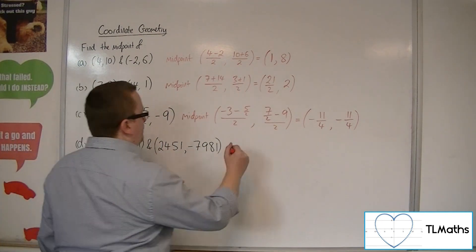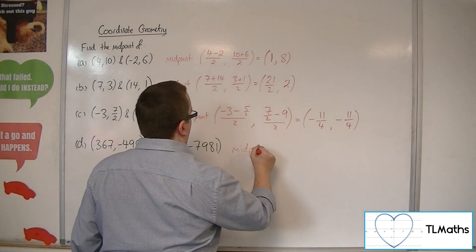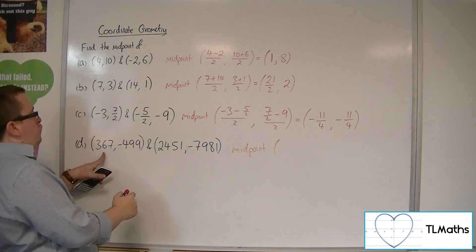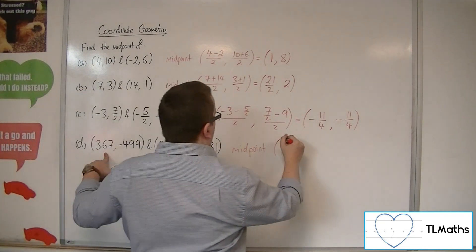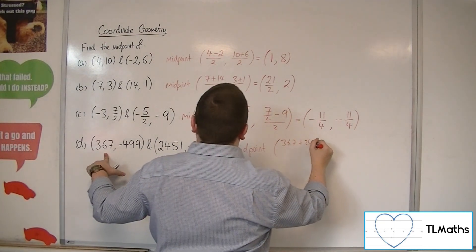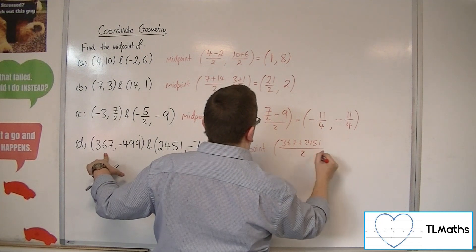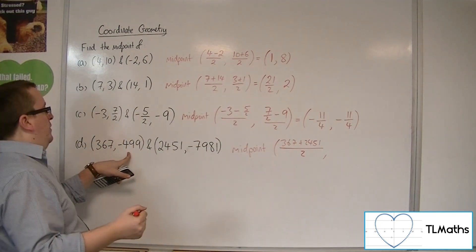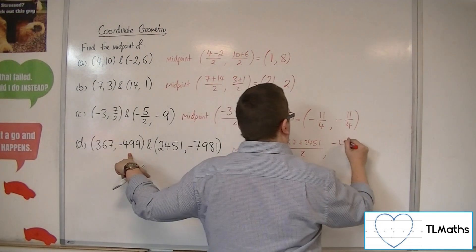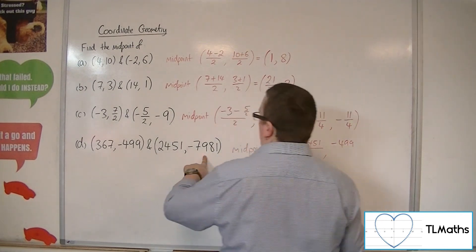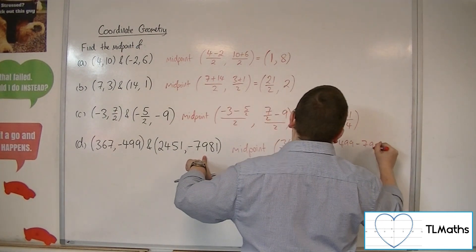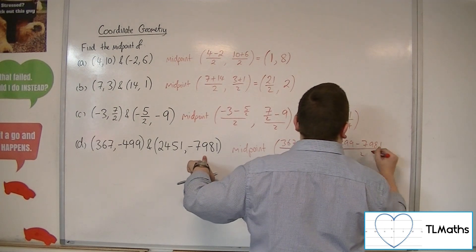Then for D. We've got 367 plus 2,451 over 2. Minus 499 plus negative minus 7,981. So take away 7,981, all over 2.